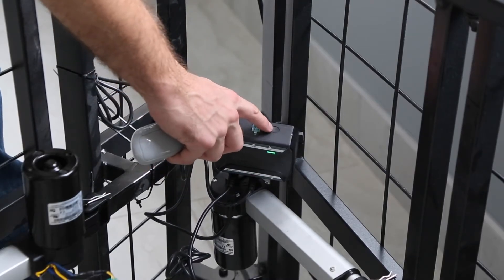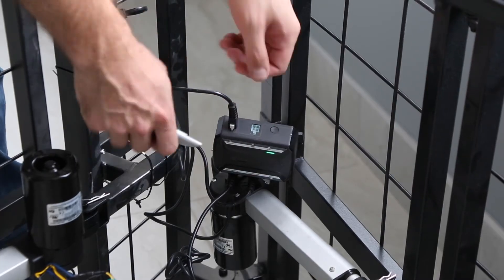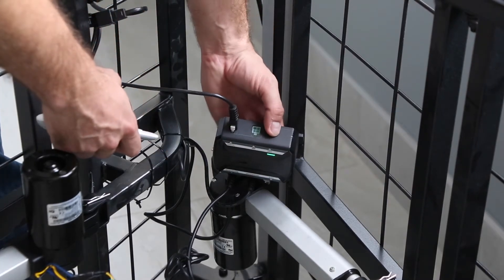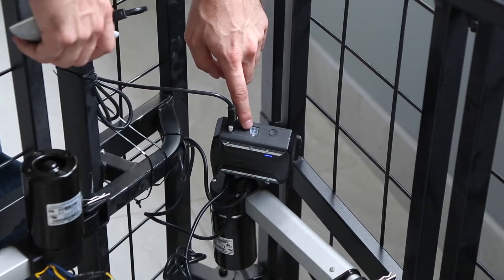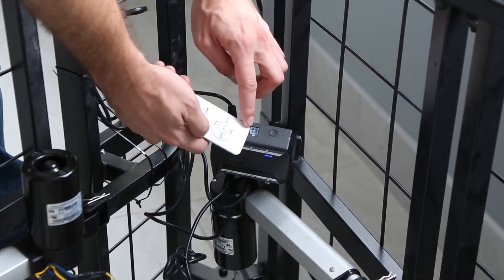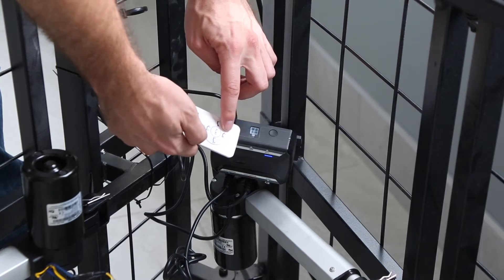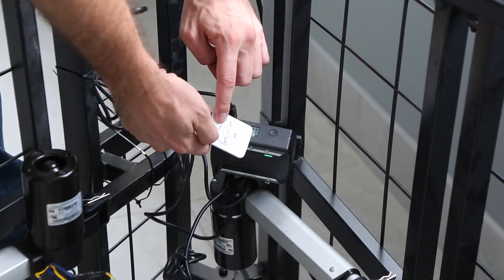On it is a button right here, and you will just want to double tap that button. And you'll see this light will turn blue. And on your remote, you will want to find your head up and head down button.